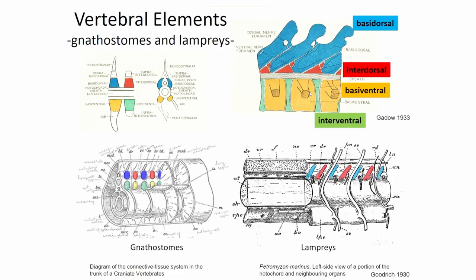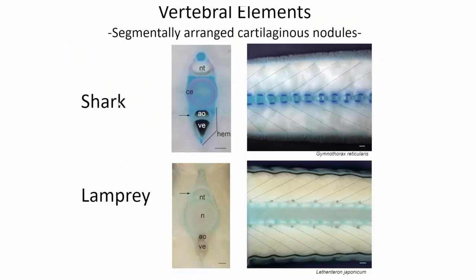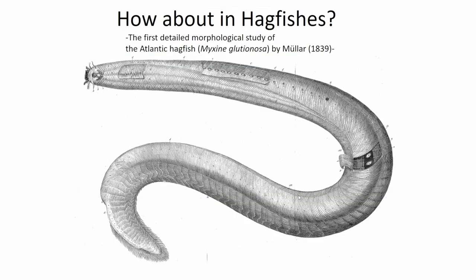In the lamprey, the ventral part is missing. And the hagfish is totally missing the axial skeleton or vertebral element. In the horizontal section you can recognize segmentally arranged vertebral elements in the shark, and lamprey also has cartilage — they look like a closely related group. But how about in the hagfish?